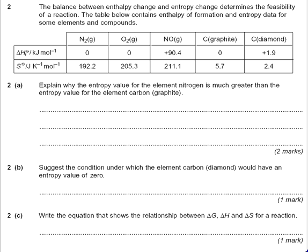I was reading that without underlining my keywords, which is a habit I like to get my students into. So we're going to have a look at — explain why entropy value S is greater for nitrogen. Here we have nitrogen at 192, than the entropy value for the element carbon, graphite, at 5.7.